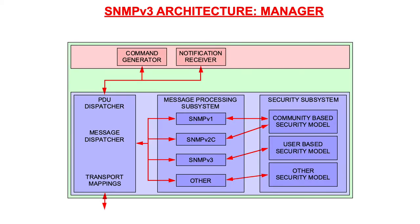Here we see the architecture of an SNMP manager. The application subsystem consists of two modules: the command generator, which issues GET and SET requests, and the notification receiver, which handles the reception of informs and traps. The SNMP engine — the blue part below — shows the dispatcher, message processing, and security subsystems. The dispatcher receives commands from the application, passes them to the message processing subsystem for further processing, and sends the final message over the transport layer using transport mappings.